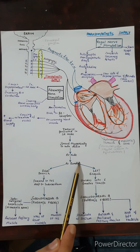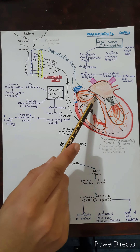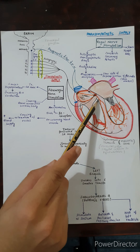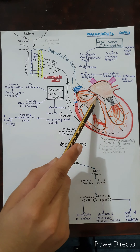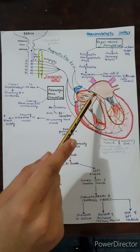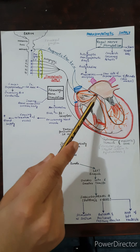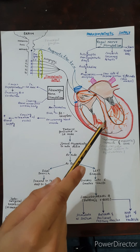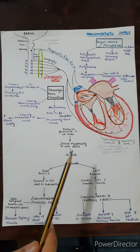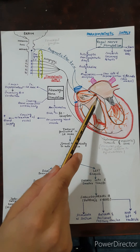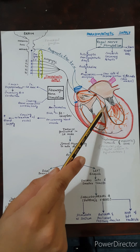After reaching the AV node, the impulse travels to the AV bundle. The AV bundle transmits the impulse from the AV node to the Purkinje fibers.